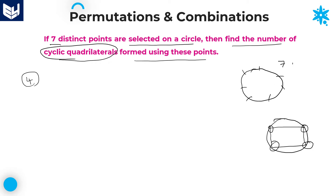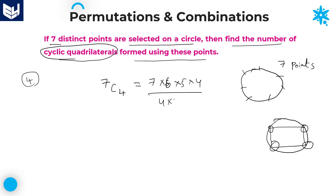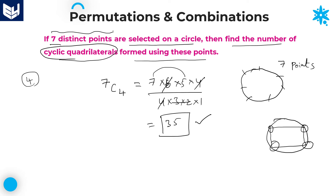Now, as we have a total of 7 points, out of 7 points, in order to form a cyclic quadrilateral, we need to select only 4. Selection is nothing but a combination. Selecting 4 points out of 7 happens in 7C4 ways. 7C4 equals 7 into 6 into 5 into 4, divided by 4 into 3 into 2 into 1. Here 4 gets cancelled, 6 gets cancelled, leaving 7 into 5, which equals 35. Therefore, the number of cyclic quadrilaterals formed is 35.